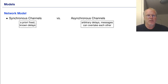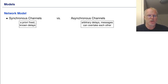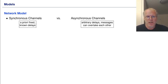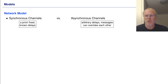In the literature, one considers several models. With respect to the network, one distinguishes synchronous channels and asynchronous channels. In synchronous channels, the delay of the channels is bounded by a constant, whereas in asynchronous channels messages can be delayed arbitrarily and messages can even overtake each other.